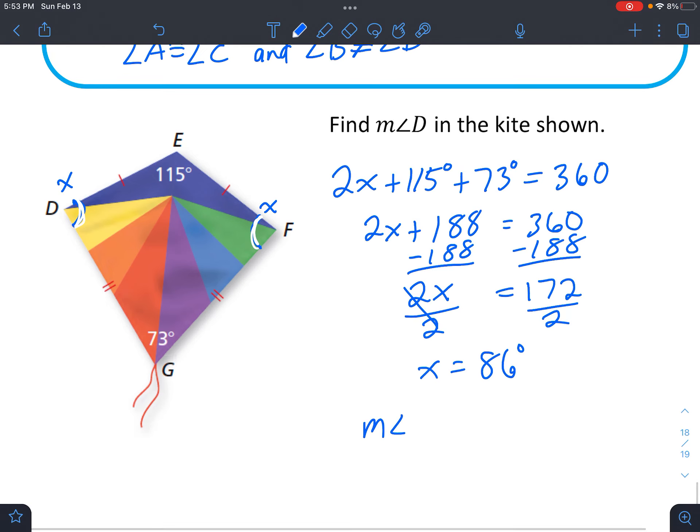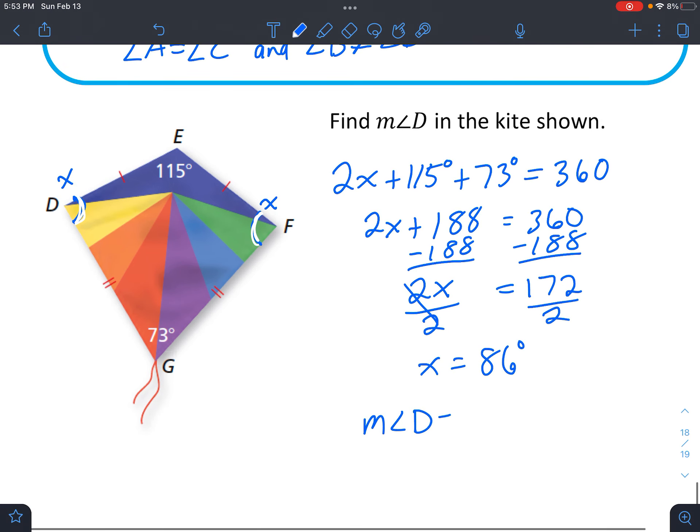And because they're the same, we know that they're both 86. Just asked us though for the measure of angle D, which is 86.